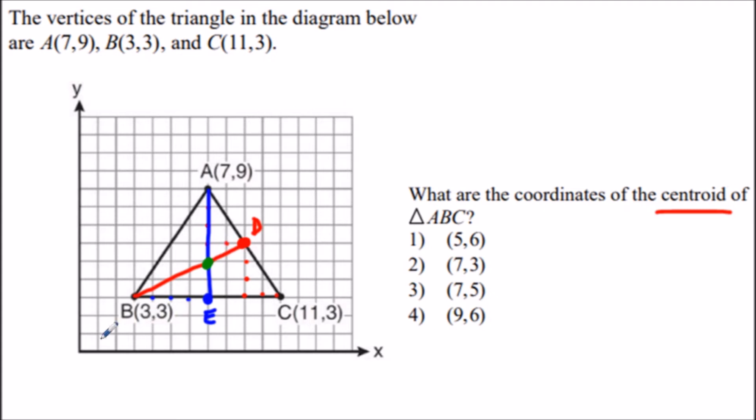To identify the coordinates, we count over seven units and up five units. So the coordinates of the centroid are (7,5).